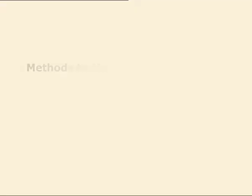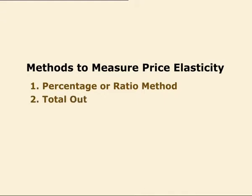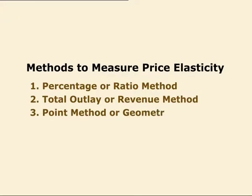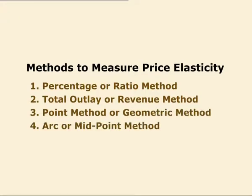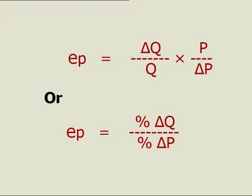Measurements of Price Elasticity. There are four methods to measure price elasticity of demand: percentage or ratio method, total outlay or revenue method, point method or geometric method, and arc or midpoint method. Percentage or Ratio Method: an accurate figure of price elasticity can be obtained by this method. Price elasticity is calculated as the ratio of percentage change in demand to percentage change in price. If Q is the quantity demanded, ΔQ is the change in quantity demanded, P is price, and ΔP is the change in price, then symbolically: EP = (ΔQ/Q) × (P/ΔP), that is, percentage change in quantity upon percentage change in price.